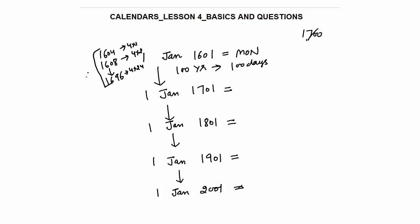Total 24 leap years, and in these 24 leap years, 29th February comes 24 times. So total odd days are 124. Now divide by 7: 7×17 is 119, so total will be 5 odd days. Counting the same way, there will also be 5 odd days.